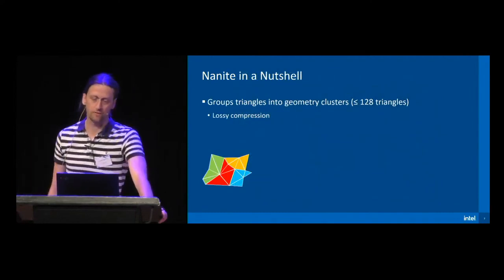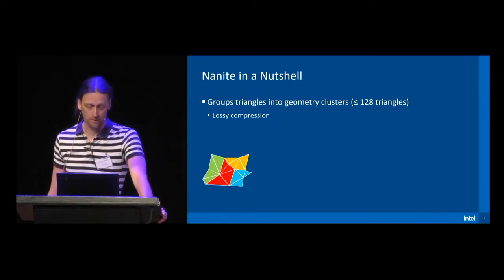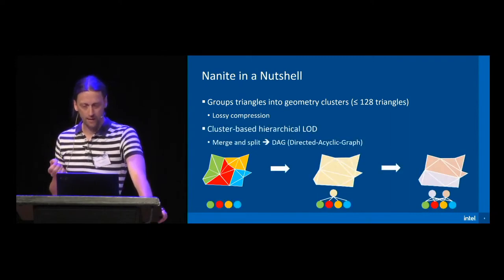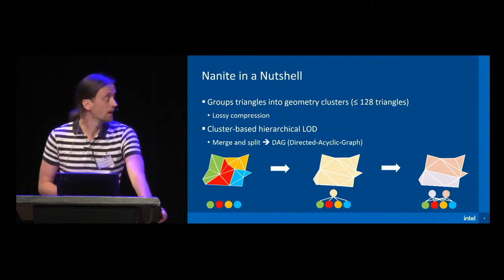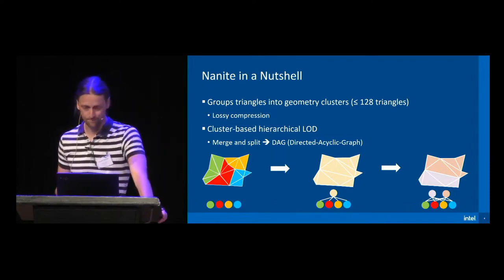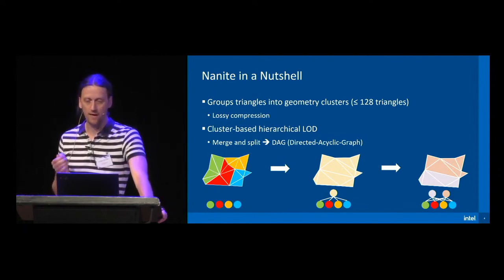In general, Nanite first partitions the input geometry into small triangle clusters and applies lossy compression to reduce their memory footprint. In our little example, the input mesh of 16 triangles is subdivided into four clusters with four triangles each. Nanite then builds a cluster-based hierarchical LOD structure by following a merge-and-split strategy. The four clusters get merged into a new cluster, and the geometry gets simplified while preserving the boundary edges. The simplified cluster then gets split into two smaller clusters, turning the hierarchy into a DAG — a directed acyclic graph — where a child node can have multiple parents.